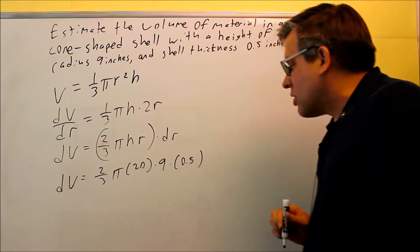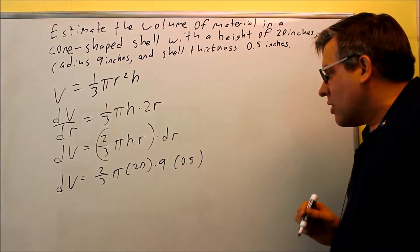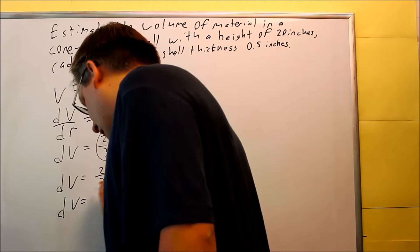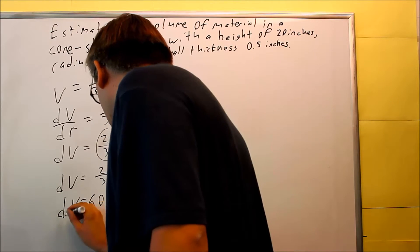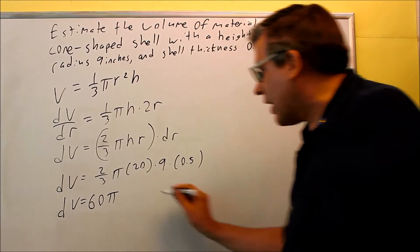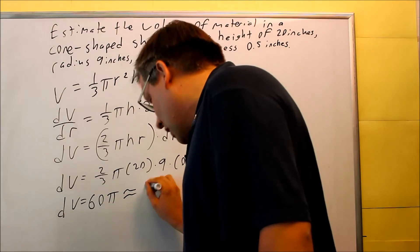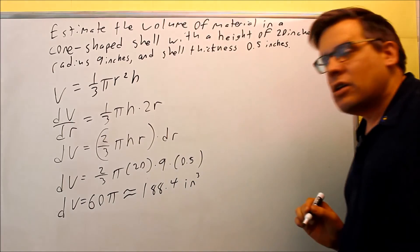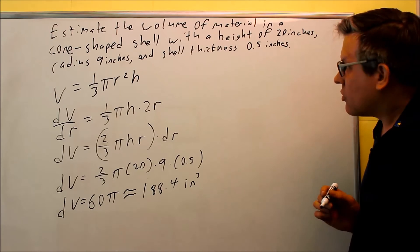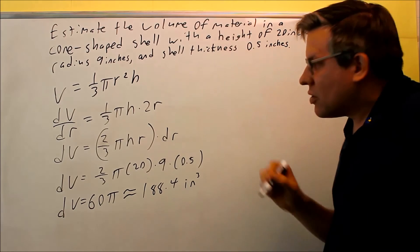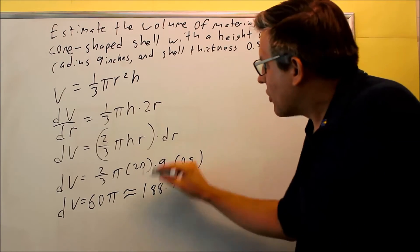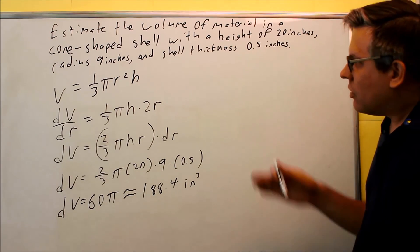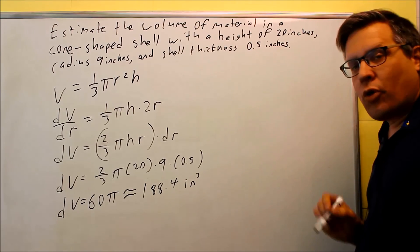So now we're just going to go ahead and simplify all this. Half of 20 is 10, so I get 90 times 2, 180 over 3. So when I work all that out, I'm going to get 60π as the exact answer. That's in terms of π. If you wanted to get a decimal for it, that's going to be 188.4 inches cubed would be the unit that you're going to use here because you're talking about inches and volume means it's cubic dimensions. And so this would be the estimation for the amount of material that's required in this particular shell with a thickness of 0.5 inches.